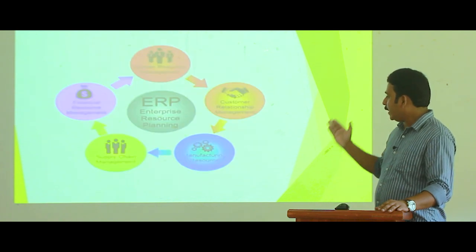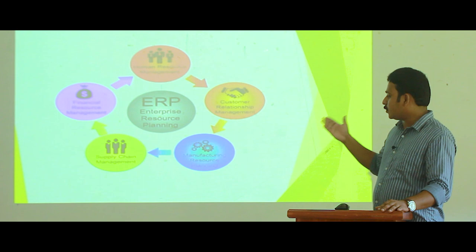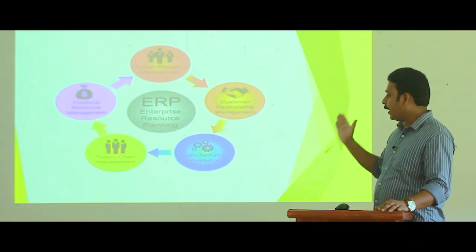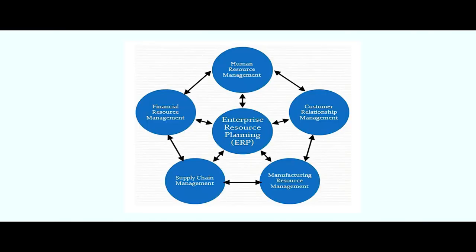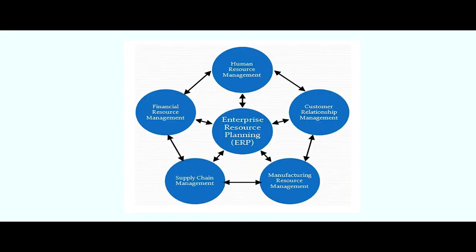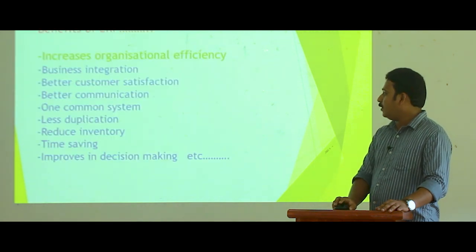The next diagram shows human resource management, customer relationship management, manufacturing resource management, supply chain management, and financial resource management. These different managerial and departmental activities of an organization are combined together and integrated with the help of Enterprise Resource Planning software.